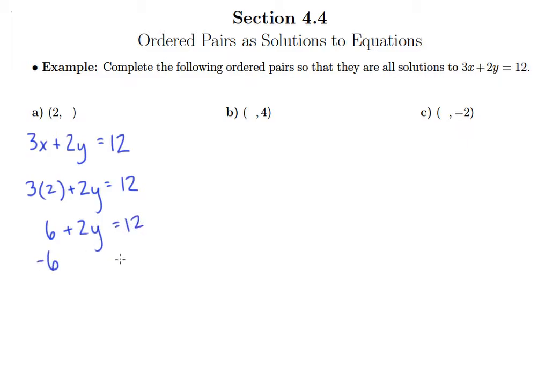We subtract 6 from both sides. 2y equals 6. And then we can divide by 2 on both sides to get y equals 3. And so that means that my completed ordered pair would be 2, 3. And that is going to be a solution to this equation.